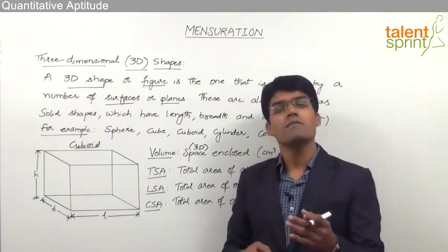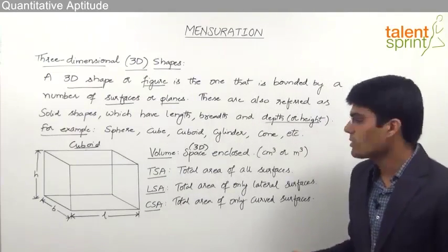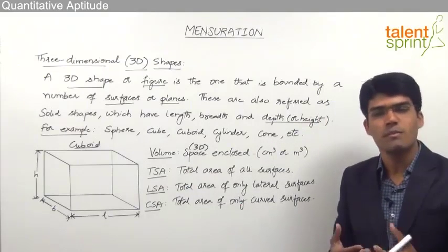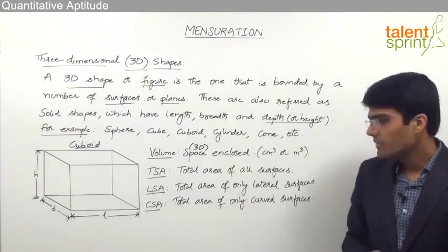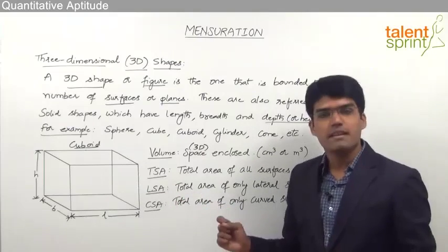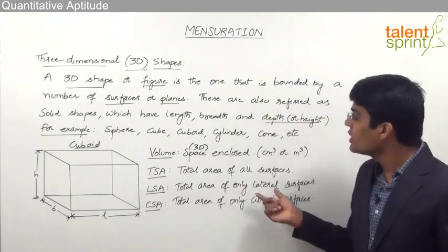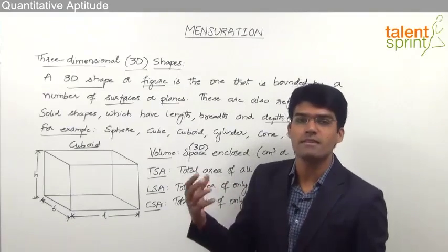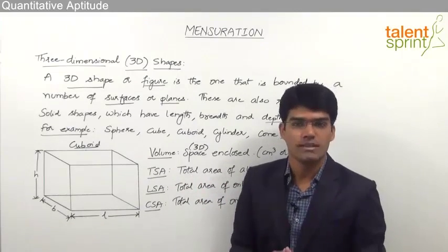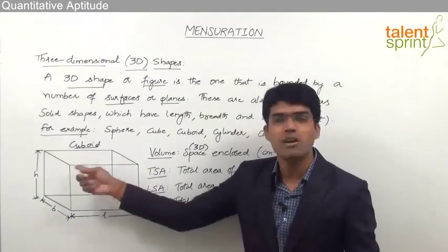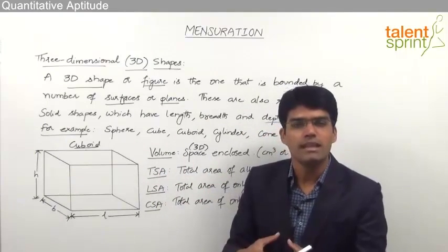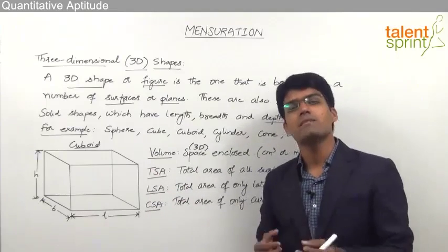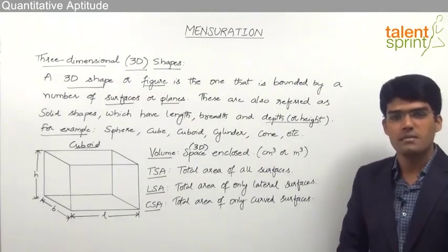Area is measured in terms of meter square or centimeter square, and since total surface area is a type of area, it is also measured in terms of meter square. Lateral surface area is the total area of only the lateral surfaces — the surrounding surfaces of the object. The surrounding surfaces here are 4, so when we add up the area of all these 4 surfaces, we get the lateral surface area, which is again measured in terms of meter square or centimeter square.